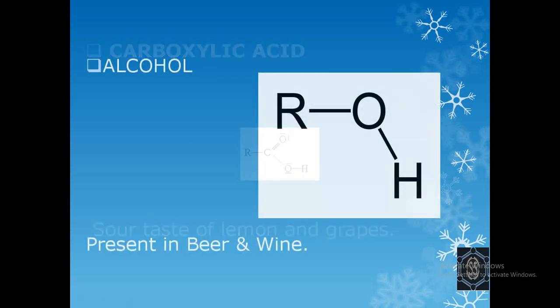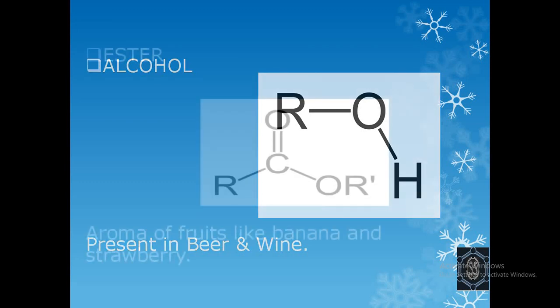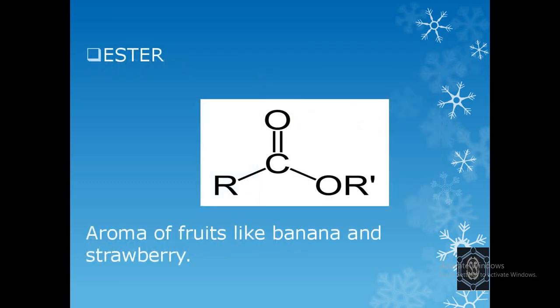Next is the alcohol group. In this, the hydrogen of an alkyl group is replaced by the OH group. Alcohol is found in beer and wine. Next is the ester group. Esters are derived from carboxylic acid in which the OH group is replaced by the OR group, and the ester functionality becomes COOR. The aroma of fruits like banana and strawberry is due to this ester functionality.